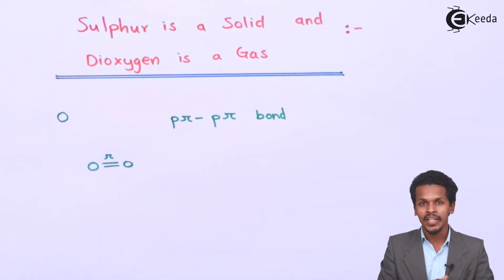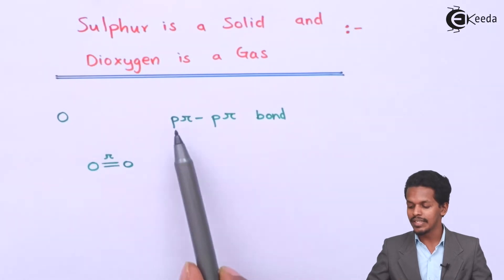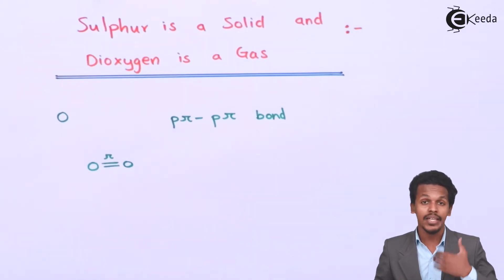If we talk about sulfur, sulfur does not form P-pi P-pi bonds with other sulfur. That's the reason they have no tendency to form a gaseous state, and in fact they have a tendency to form catenation.